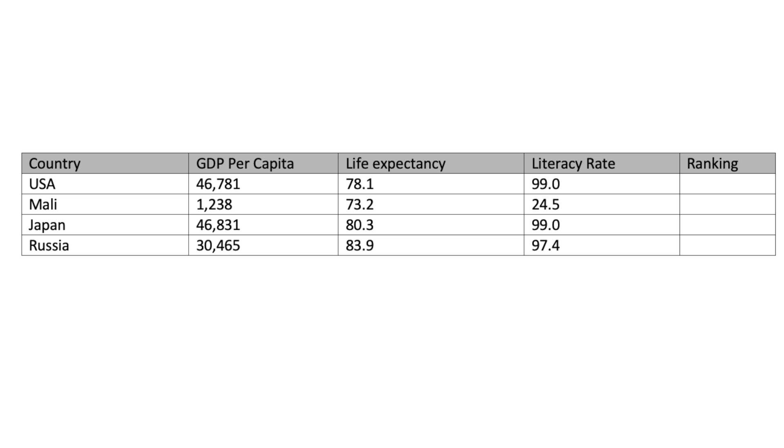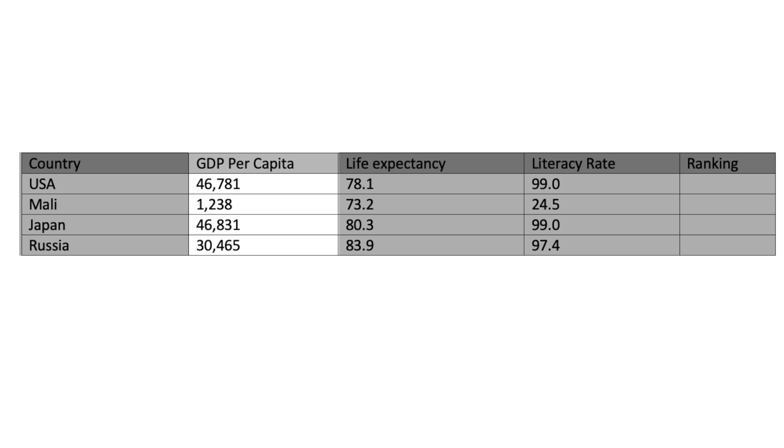But we do have one more thing to go over — how do we determine a standard of living using GDP, literacy rate, and life expectancy? So let's get into that. The first thing we need to do is look at the chart. As we look at the chart, you will see a list of countries and then categories of GDP per capita, life expectancy, and literacy rate.